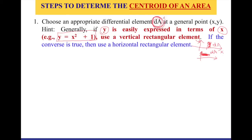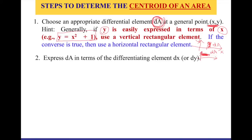That's step one: defining the differential area element and locating it at x and y in a two-dimensional Cartesian coordinate system. Step two: express dA in terms of the differential element dx or dy. For example, if I have a two-dimensional area where y is the height and dx is a small width on the x-axis, then my area dA is going to be y dx. That's what we mean by expressing dA in terms of either dx or dy.